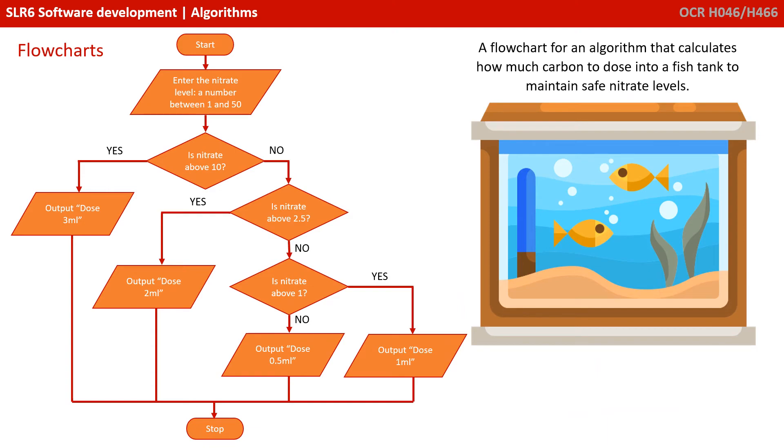Here's another example of a flow diagram. Now, this algorithm calculates how much carbon to dose into a fish tank to keep nitrates at bay. It starts by asking what the nitrate level is. And says, if the nitrate is above 10, then output 3 mil.